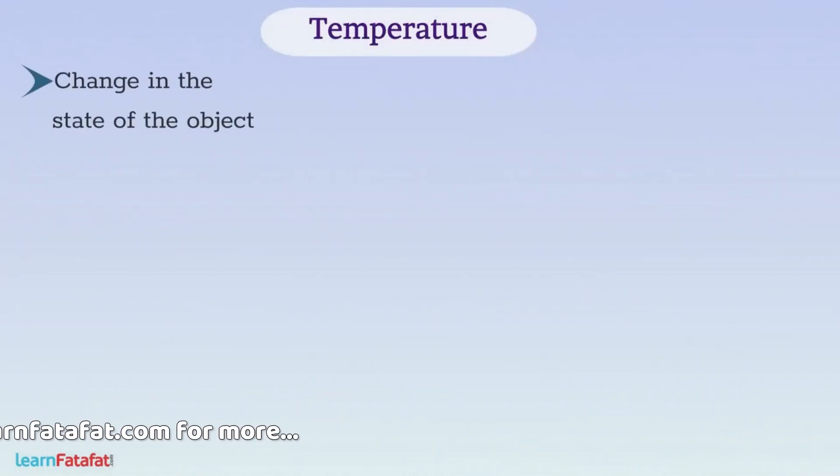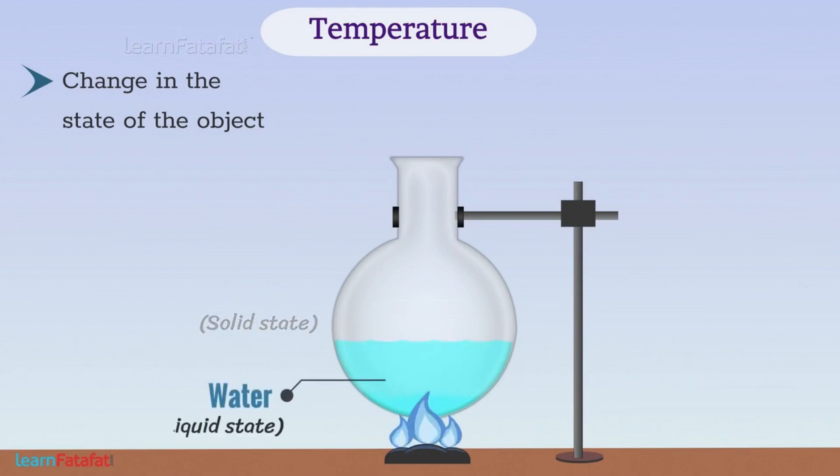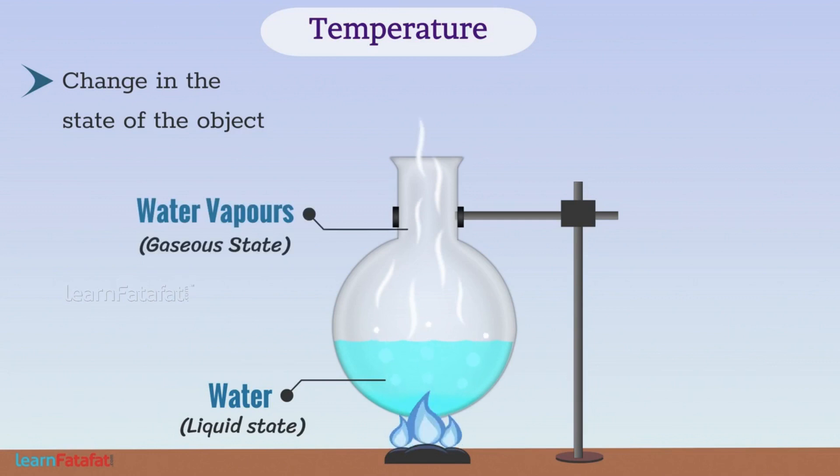For example, temperature can change the state of the object. With increasing temperature, ice, which is in solid state, gets converted into water, which is liquid state. If we further increase the temperature of water, then it gets converted to gaseous state, that is water vapors.